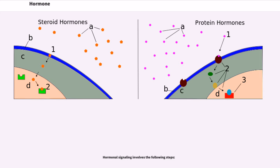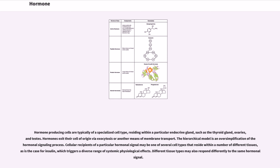Hormonal signaling involves the following steps. Hormone-producing cells are typically of a specialized cell type, residing within a particular endocrine gland, such as the thyroid gland, ovaries, and testes.